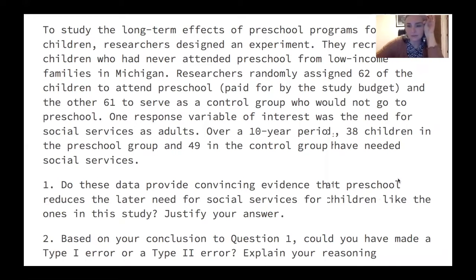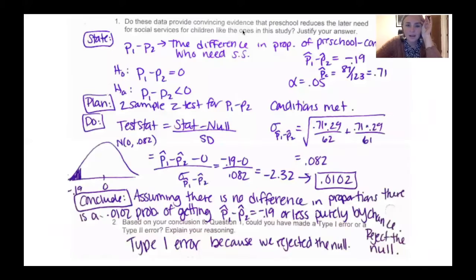And now let's talk about it. So we already showed you the setup. So the plan, the state and the plan. So now we do the do, and here is our combined standard deviation formula, which again, I'm just using that formula from before. And I get a standard deviation of 0.082.